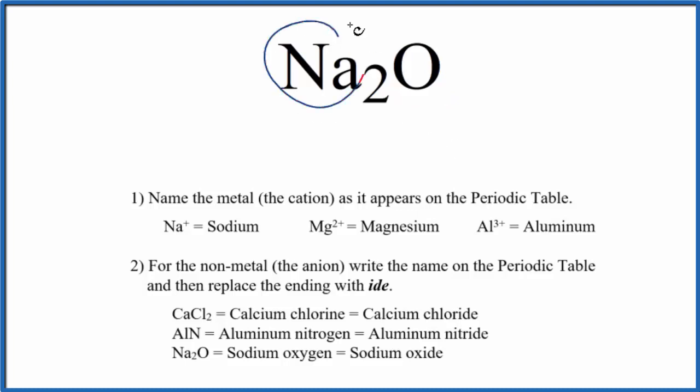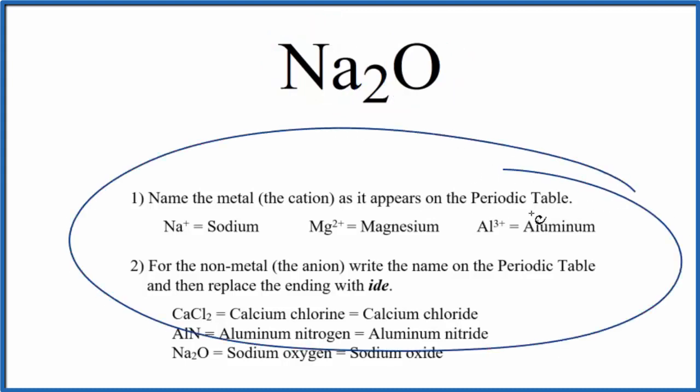Specifically, we have Na and O, two different elements, so it's called a binary ionic compound, and we use these rules here to write the name.